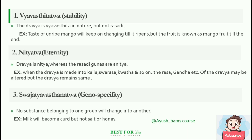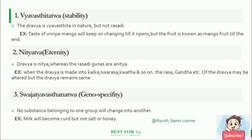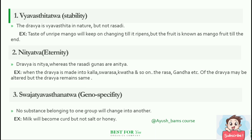Nityatva, which means eternity. Dravya is Nitya, whereas the rasadi gunas are Anitya. For example, when the Dravya is made into Kalka, Swarasa, Kvatha and so on, the Rasa, Gandha, etc. of the Dravya may be altered, but the Dravya remains the same.